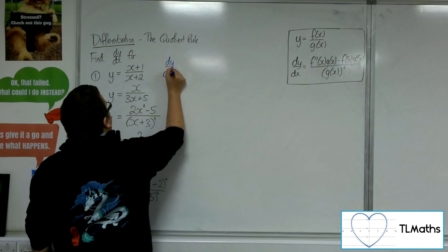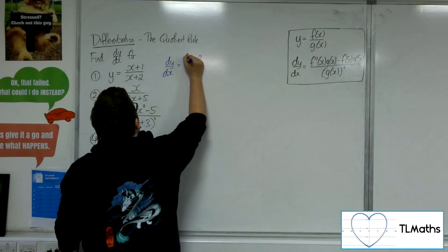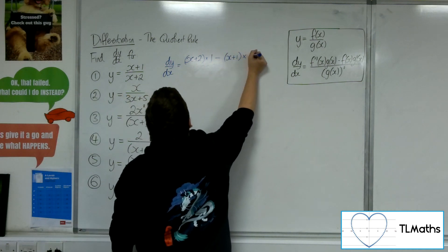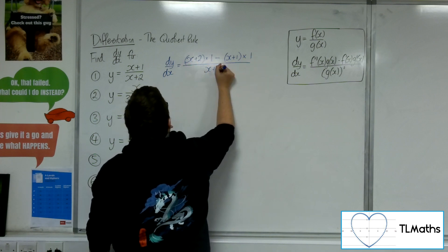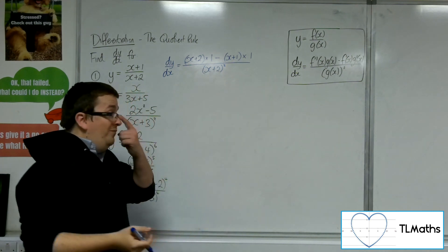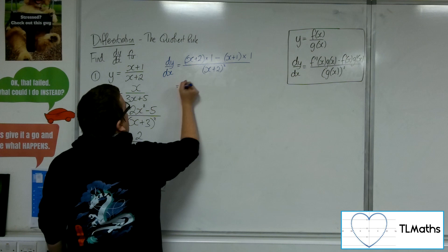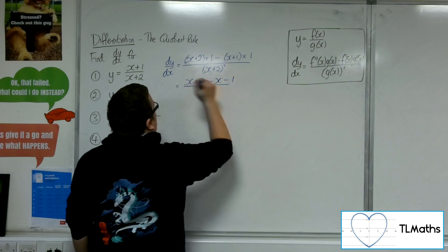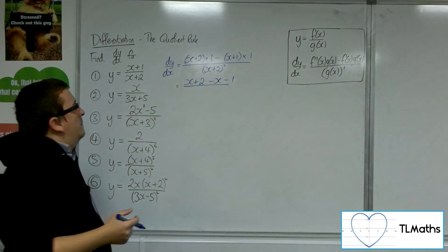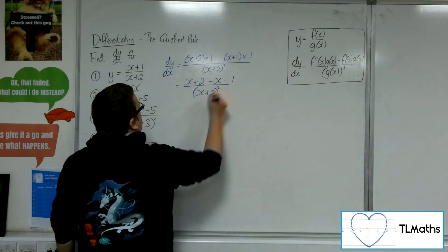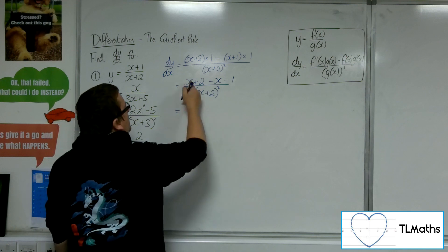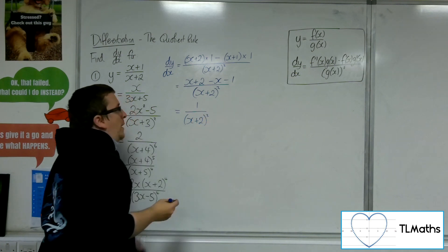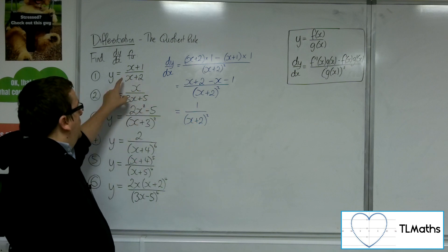So dy/dx is the bottom times the derivative of the top, which is just 1, take away the top times the derivative of the bottom, which is just 1, all over the bottom squared — so (x+2) squared. Simplifying, we have x+2 take away (x+1), the x's cancel, leaving 2 take away 1, which is 1. So we get 1 over (x+2) squared as the first derivative of number 1.